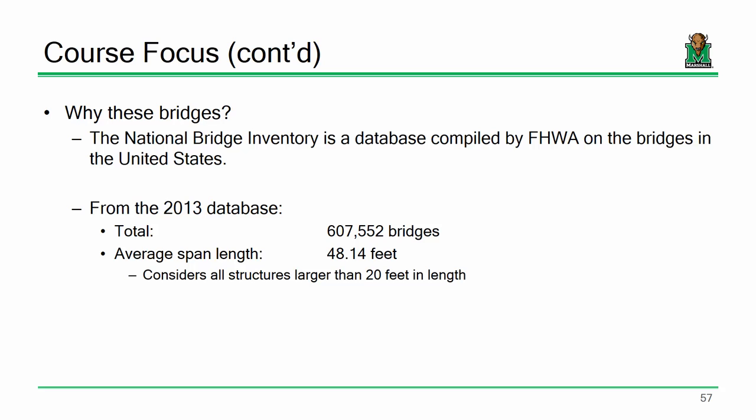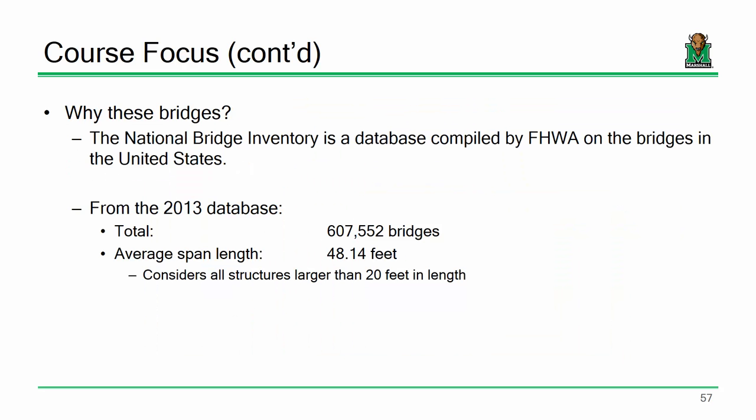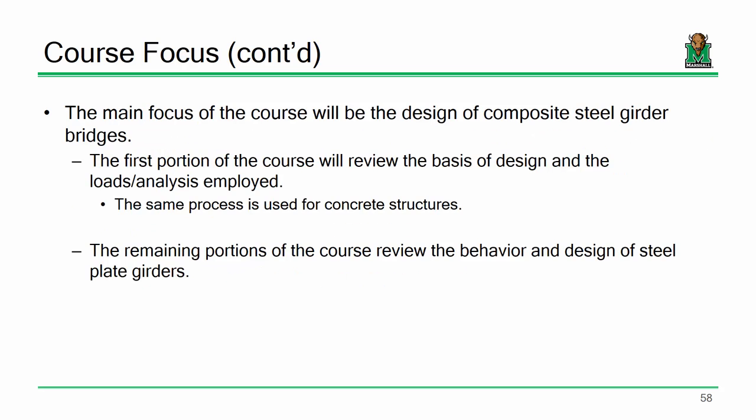Looking at the National Bridge Inventory, a database of just about every bridge in the United States: based on the 2013 data, there are a little over 600,000 bridges in the NBI, and the average span length is only 48 feet. That's why I don't spend time on massive suspension bridges — I cover the stuff you're actually going to see in your jobs and careers. We're mainly going to focus on steel bridges, with the first part covering basis of design and loads in a material-neutral way, before focusing on steel since there's already a full course devoted to concrete.